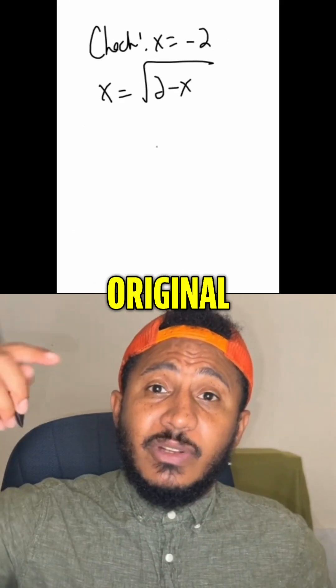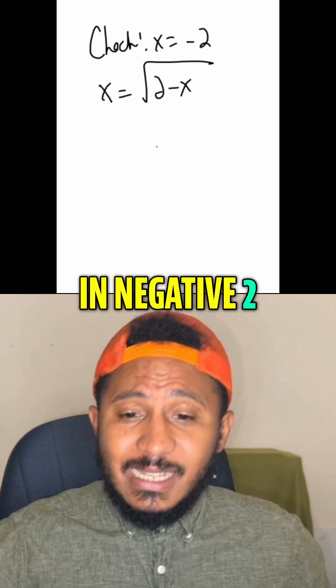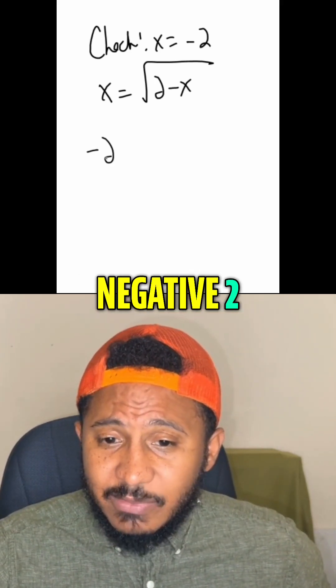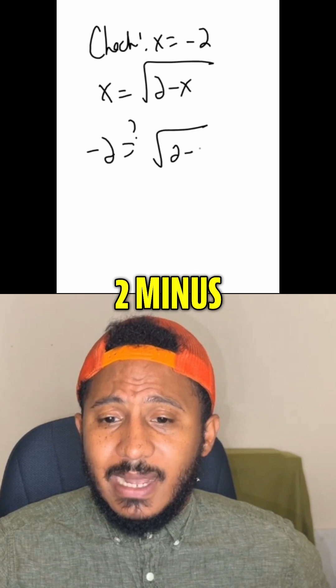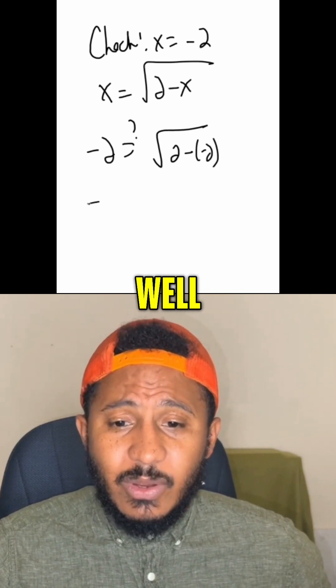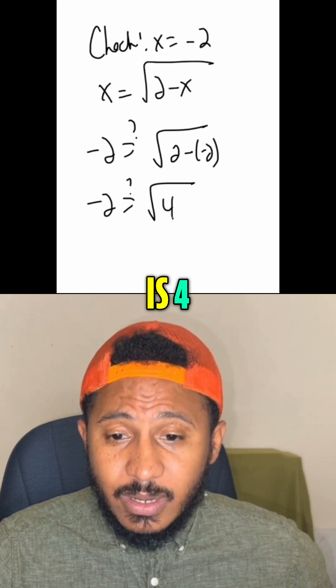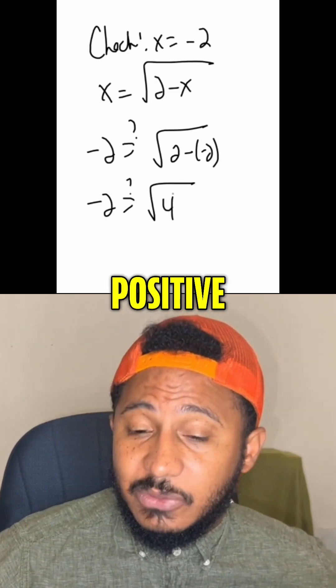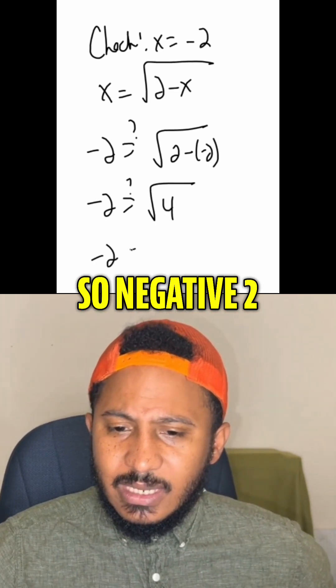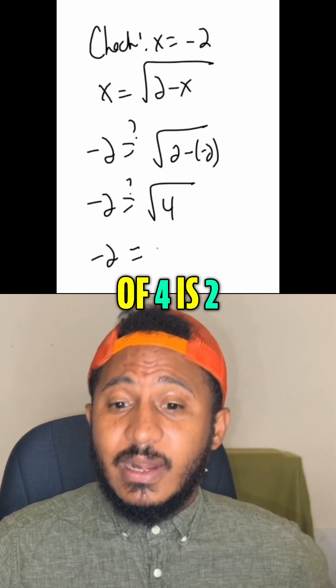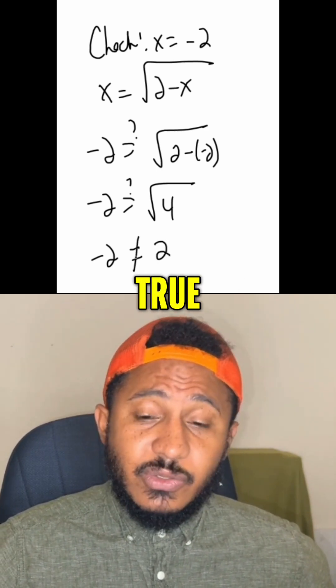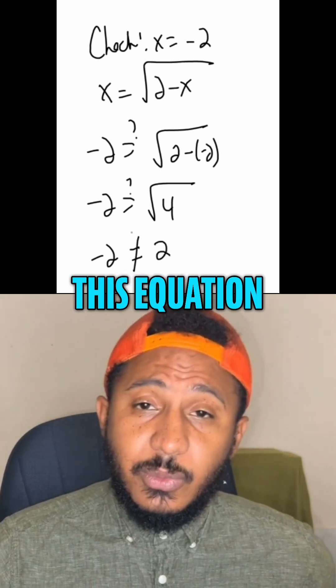All right, so how do we check? We plug it back into the original, see if we get a true statement. So if I plug in negative 2, we get is negative 2 equal to the square root of 2 minus negative 2? Well, is negative 2 equal to the square root of 4? This is a positive square root, so negative 2, is that equal to the positive square root of 4? It's 2. Is this true? No, this is not true. So negative 2 is not a solution to this equation.